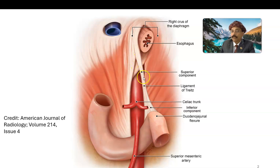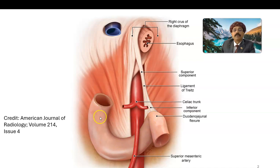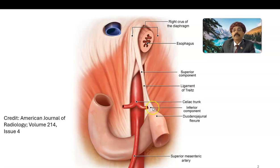Its normal function is to help in the passage of digested and semi-digested food through the duodenum in a proper way. It is also a landmark during surgery and an anatomical landmark between the duodenum and jejunum.